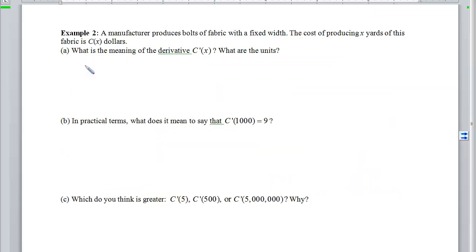With example 2, we have a manufacturer that produces bolts of fabric with a fixed width. The cost is going to be c of x, where x represents the number of yards that have been produced. So if we think graphically about this, we can have x, which is measured in yards, and it's going to produce some function c of x.